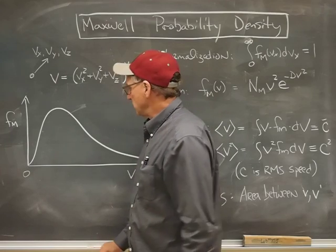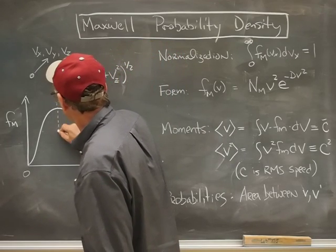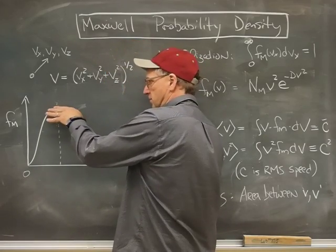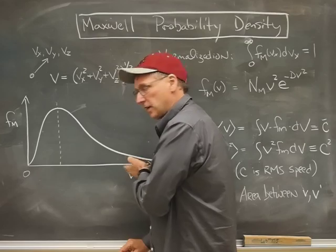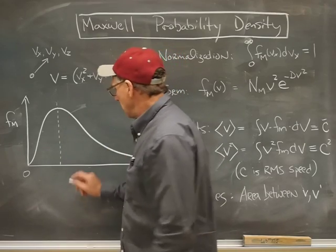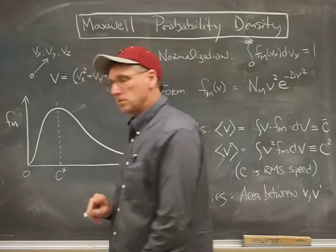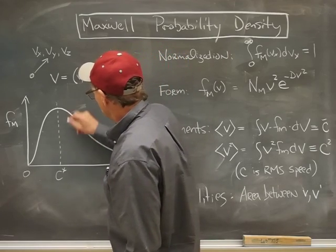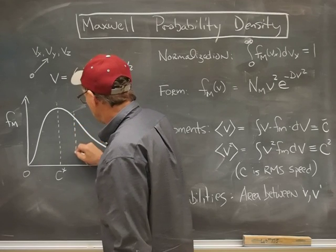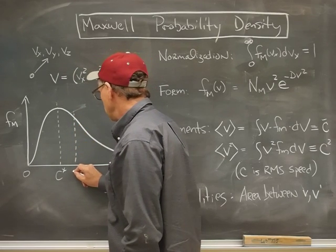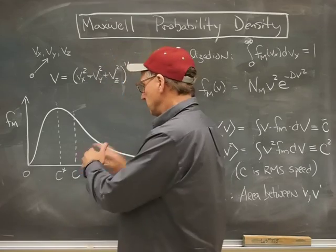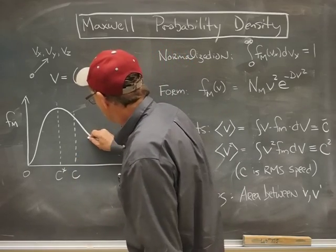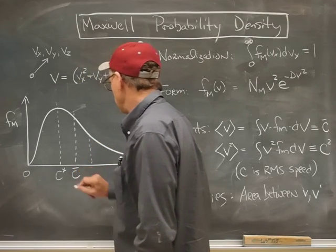There are a few points on this curve that bear special note. The most probable speed, which would be the speed at which that peak occurs, has a special name and is called C star. There's another number, which I'm going to exaggerate how far out it goes, just so I can fit it here. It would be the average speed. That's a little bit farther out.